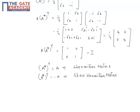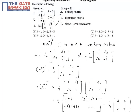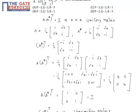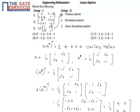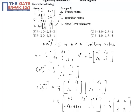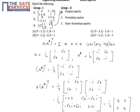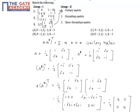Now for matrix P, doing the same operation — taking its conjugate transpose — you get back the same matrix P, so P satisfies the Hermitian matrix condition. And Q will satisfy the skew-Hermitian matrix condition.